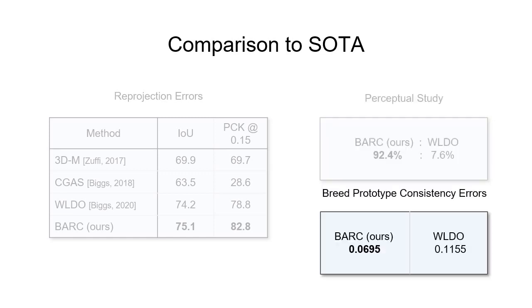Second, we complement the perceptual evaluation by a 3D breed prototype consistency evaluation. For 19 out of 20 breeds, Bark has lower error than Waldo.